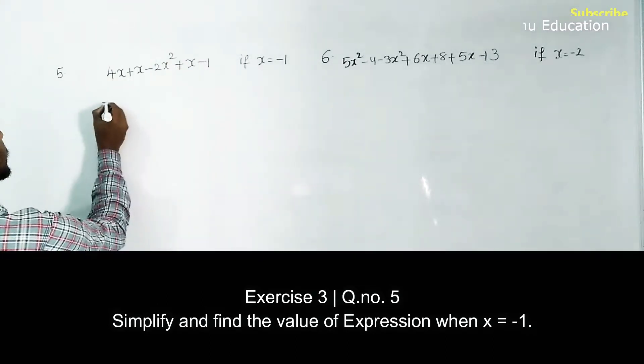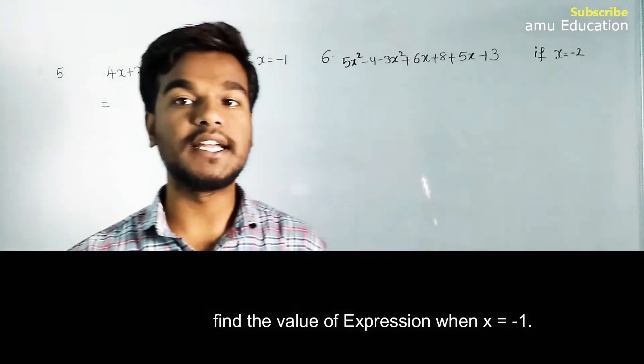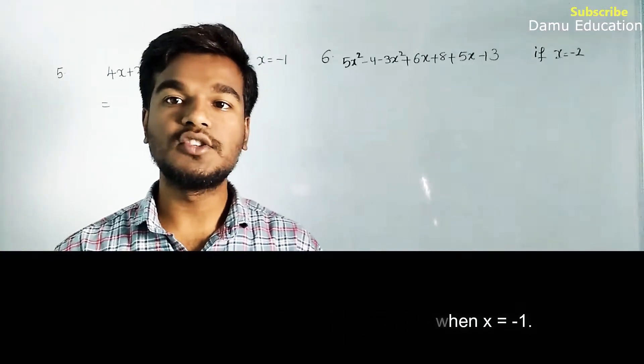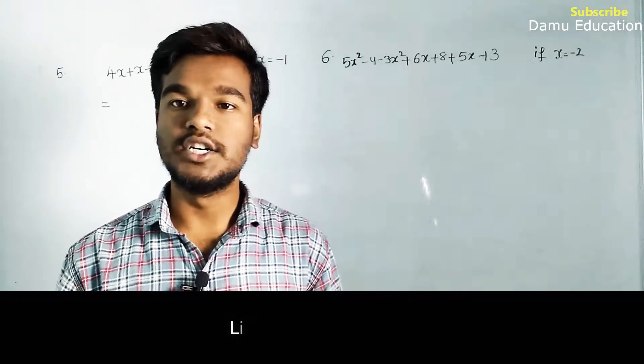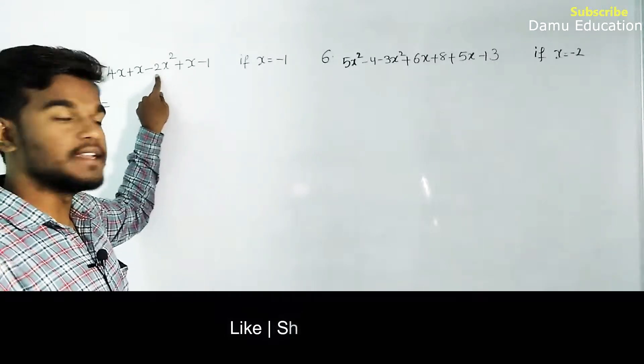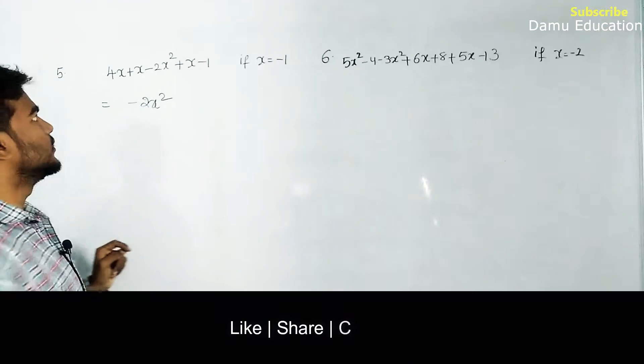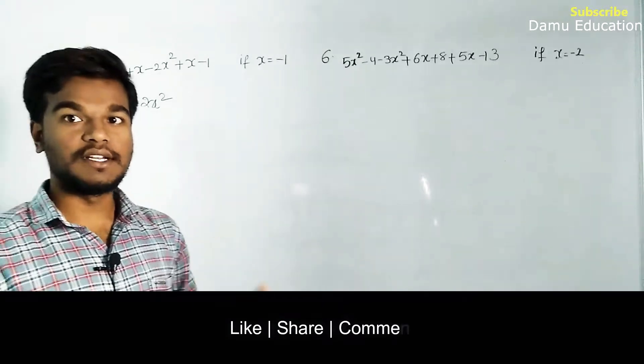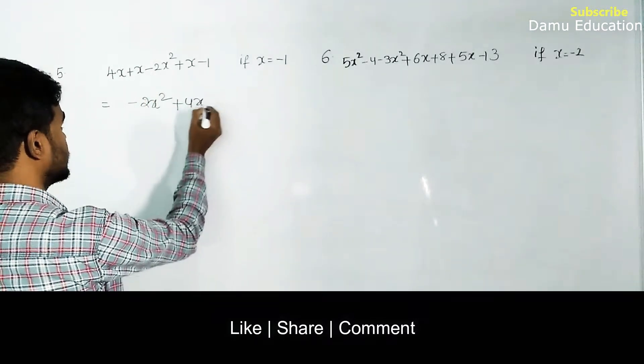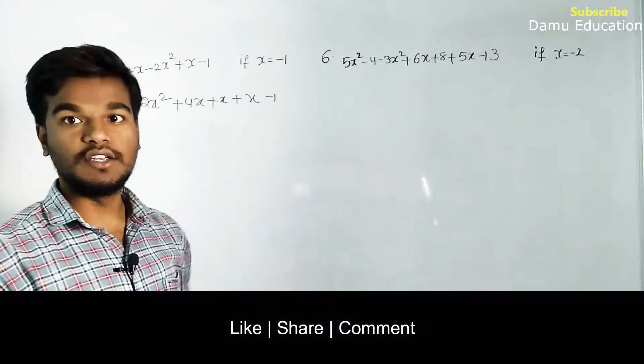Before solving, it's better to arrange all terms in descending order based on degree. Write -2x² first, then the terms with degree 1: +4x + x + x - 1.